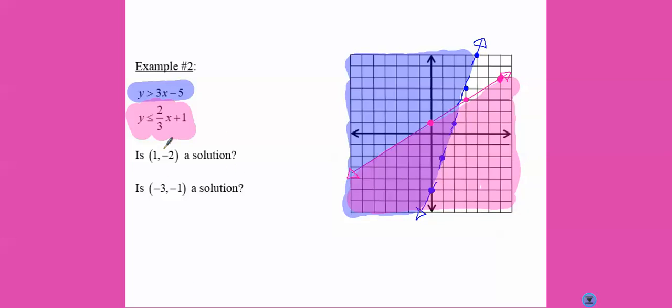All right, so now let's check. Is one negative two a solution? One, negative two. It touches both the blue and the pink. However, it is not a solution because it's on a dotted line.